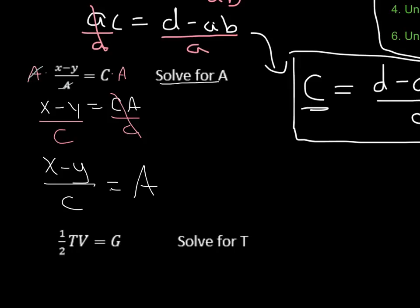Again, when do we know we are done? It says solve for a, and you see I've got a by itself over here, so my final answer is going to be x minus y divided by c equals a.